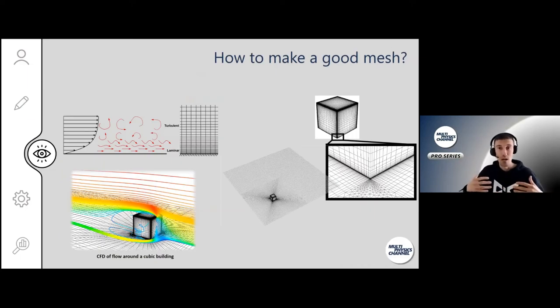How do you make a good mesh? First, look at your domain, what you want to model, and identify your region of interest. Where do you want to know your quantities, for example flow field or heat transport, temperature, and so on? That's your region of interest, where you need a finer mesh.